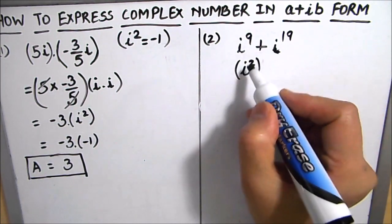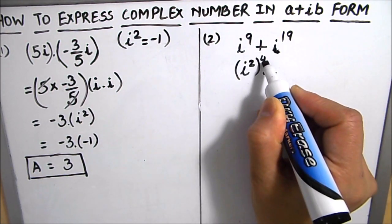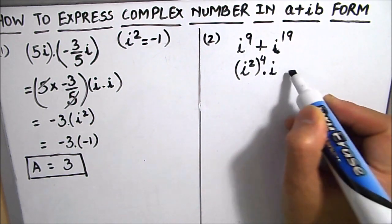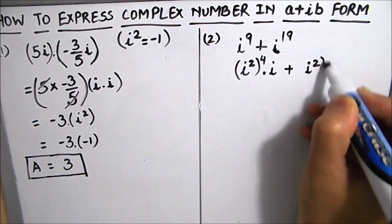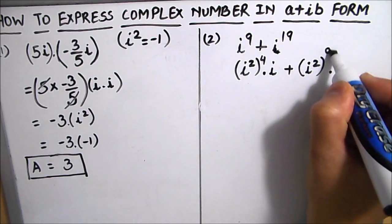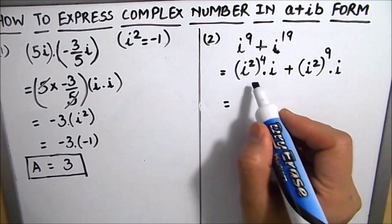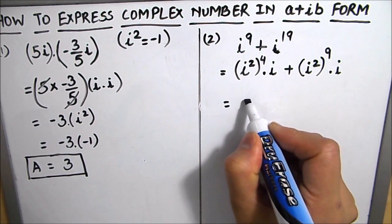So we can write this as iota square to the power 4 times iota, and the next one is if we will write it by iota square to the power 9 times iota. So we know that iota square is minus 1.